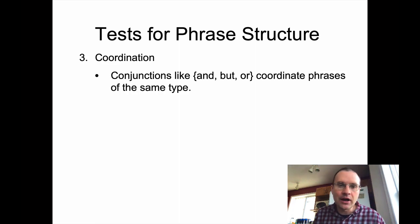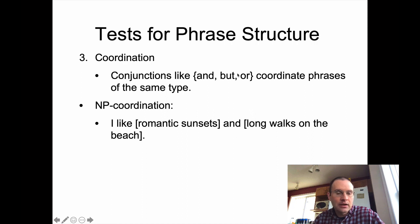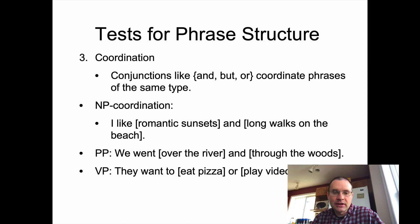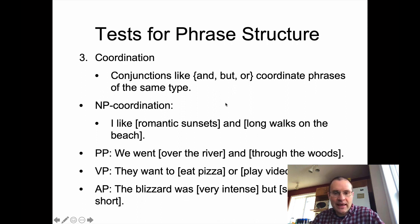The last test for phrase structure is coordination. Conjunctions — words like 'and,' 'but,' and 'or' — coordinate phrases of the same type. For noun phrase coordination: 'I like romantic sunsets and long walks on the beach.' 'Romantic sunsets' is a noun phrase; 'long walks on the beach' is another noun phrase — they work together fine because they're coordinated with 'and.' 'We went over the river and through the woods' coordinates two prepositional phrases. 'They want to eat pizza or play video games' works as well. For adjective phrases: 'the blizzard was very intense but surprisingly short.'